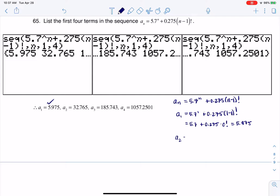If I want to do a sub 2, that would be 5.7 squared plus 0.275 times 2 minus 1 factorial and 2 minus 1 factorial is going to be 1 factorial. So we'll look at 5.7 squared plus 0.275 times 1 factorial. And when I crunch that on my calculator, I get 32.765 and that's where you see me listing that here.